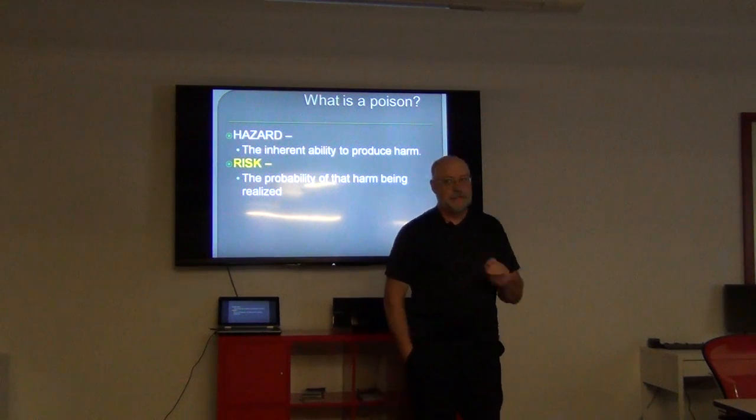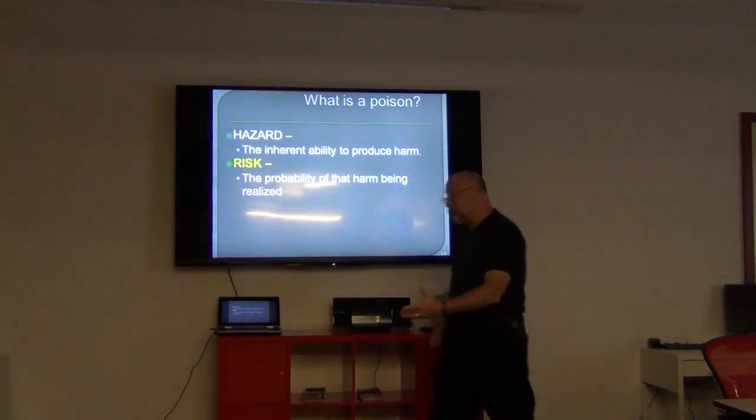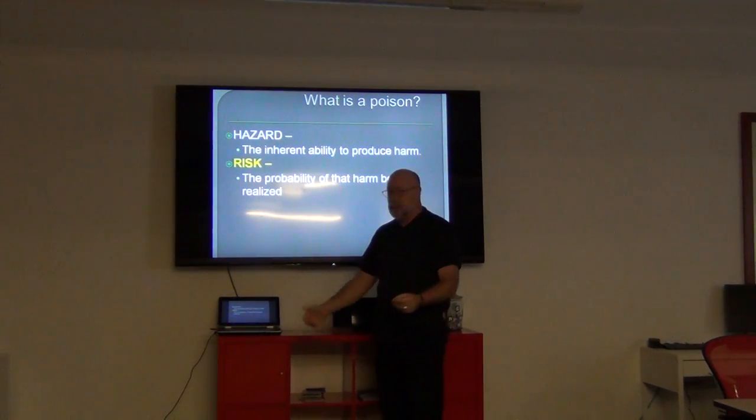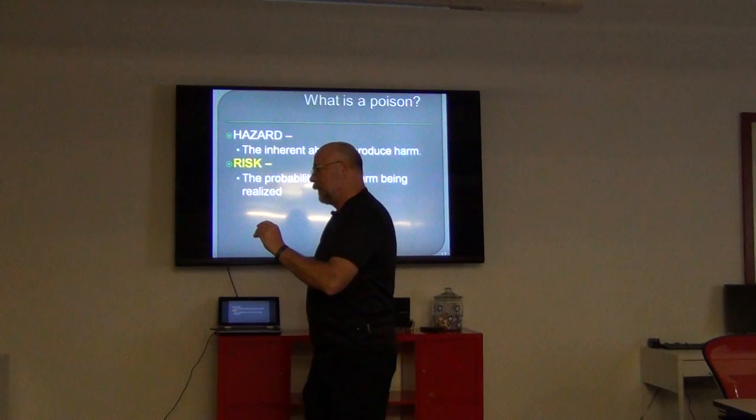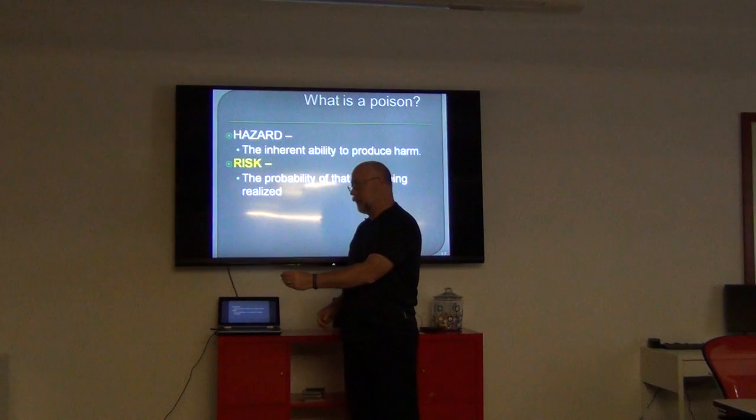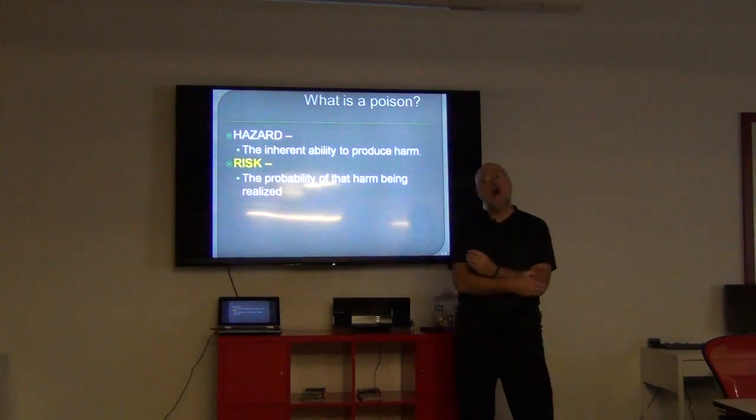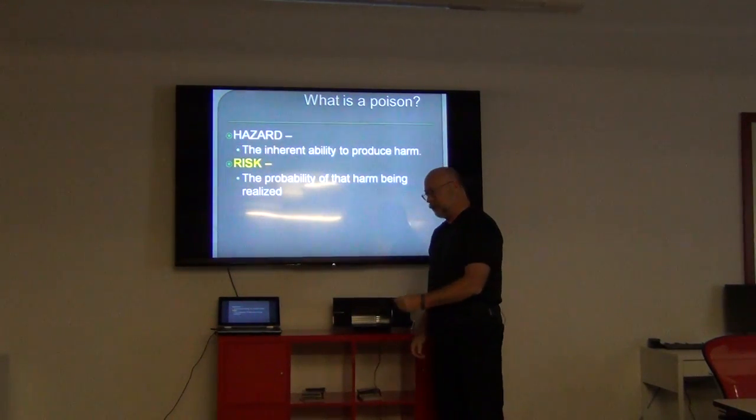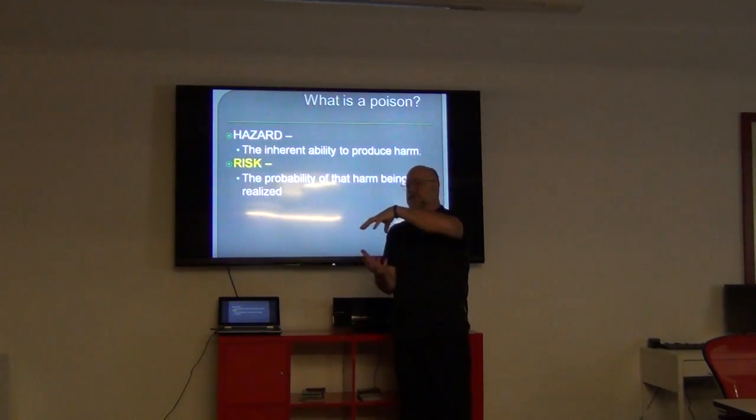So the dose makes the poison. So then that takes us into what are the terms then that we're using. If anything can be a poison and nothing might be a poison, it's only dose-related, then what kind of terms are we starting to use? The first one is going to be hazard. A hazard is something that is intrinsically capable of producing harm. That would be a hazardous material. Risk is the probability that that harm is going to be realized. So let's say, for example, if I had a cylinder of the gas that was used in the gas chambers, I've got a cylinder of hydrogen cyanide. That's a hazardous material. Hydrogen cyanide.